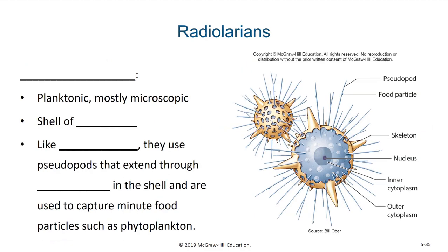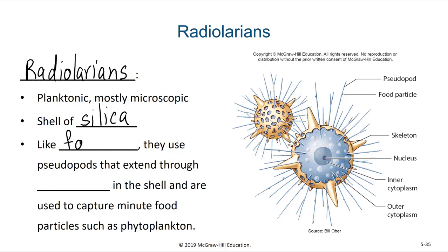Another animal-like planktonic member are the radiolarians, which in many ways are very similar to foraminifera, but they are described as star-shaped. They usually have a circular central body with rays extending outwards and are very round and circular. Unlike foraminifera, radiolarian tests are made out of silica, like the diatoms. Yet, like forams, they use pseudopods that extend through pores in their shell to capture minute food particles such as phytoplankton and detritus.